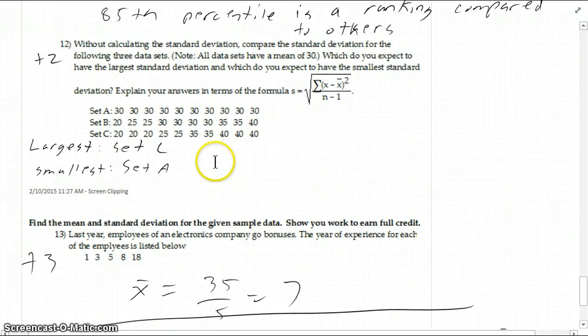12, most people did okay with this. Obviously, A has got the least deviation. They're all the same. The actual standard deviation would be 0. And C has the most deviation because it's got the most numbers that are far away from the average of 30.